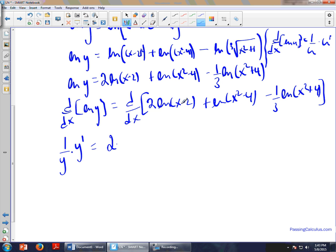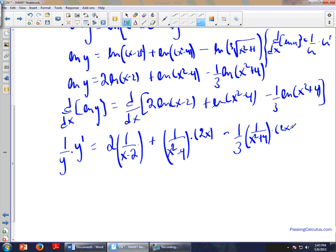We're going to worry about the derivative of ln of x minus 2 and times it by 2. So my u is x minus 2, so 1 over x minus 2 times the derivative of what's in here, which is just 1. Plus, then we'll do the same thing: 1 over x squared minus 4 times the derivative of this guy, which is 2x. Plus, and then minus 1 over 3, the derivative of this guy is 1 over x squared plus 4 times 2x.